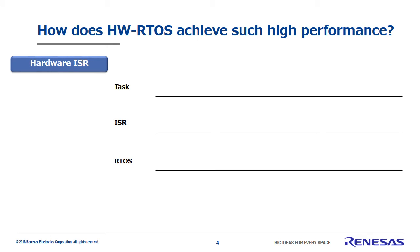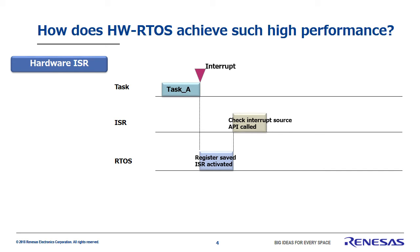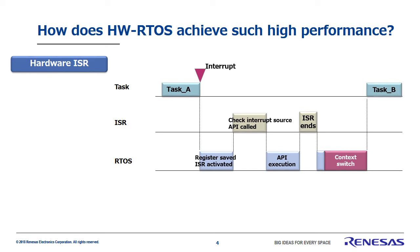Next, I'd like to discuss a function called hardware ISR. Let's look at how the process runs in conventional systems when an interrupt occurs. First, task A is running. An interrupt occurs, and handling transfers to the RTOS. The RTOS saves the values of the CPU registers and activates the ISR or interrupt service routine. The ISR checks for the interrupt source and invokes the corresponding API. The API is executed, the waiting task will be activated, and if it moves to ready, a context switch will occur if it has higher priority than task A, meaning task B will be executed. A single interrupt can cause a very complex processing situation.